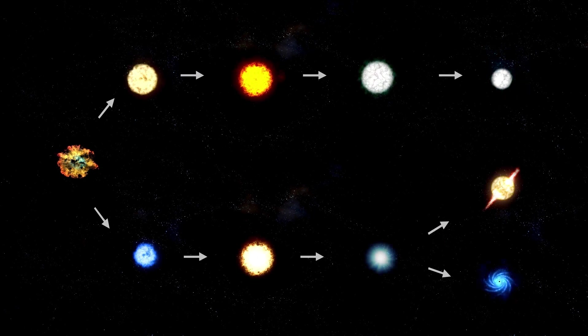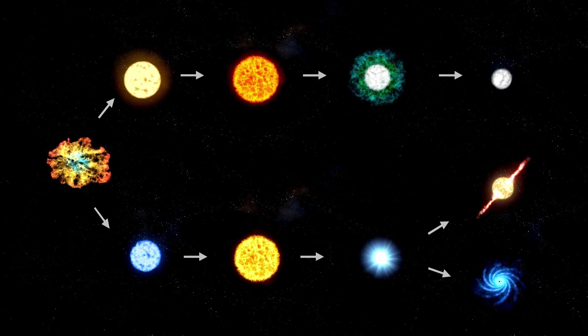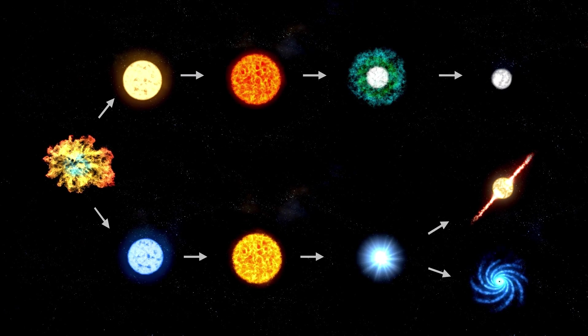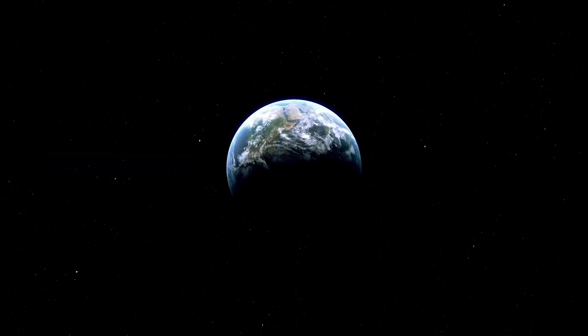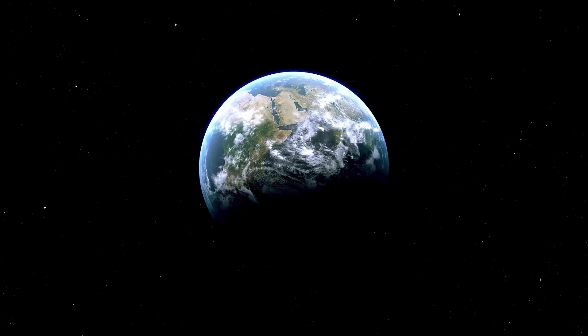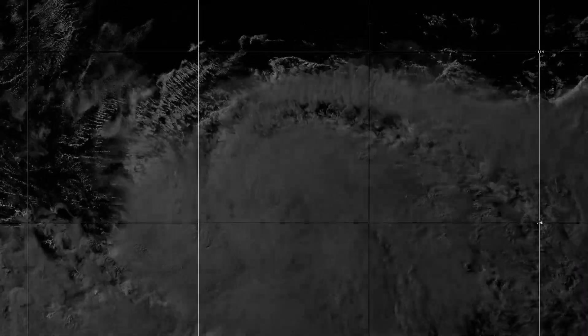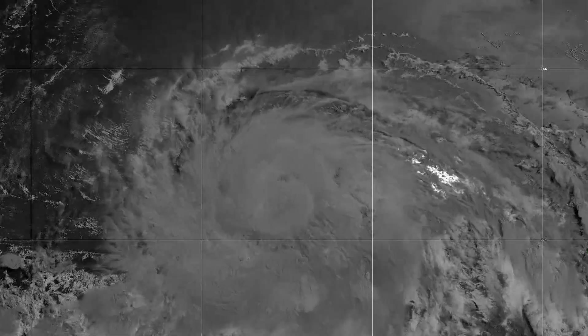Betelgeuse's corona surprised scientists by ejecting an amount of mass 400 billion times greater than the average coronal mass ejection, CME. This cloud of hot gas released by the star temporarily covered some of its light, leading to the unusual dimming observed.